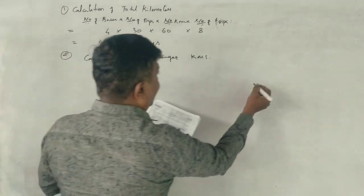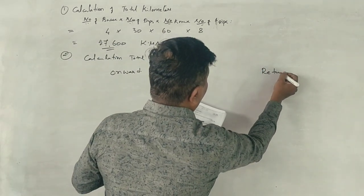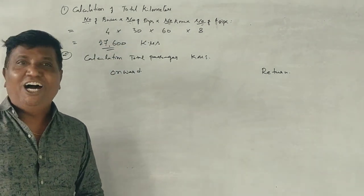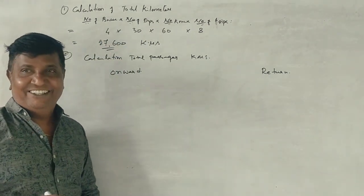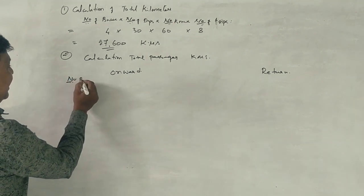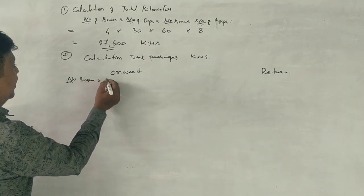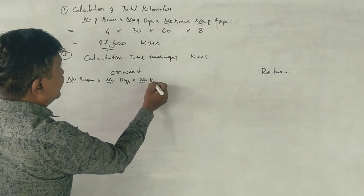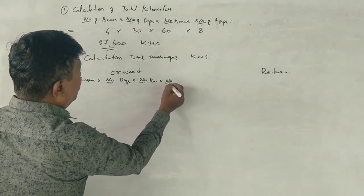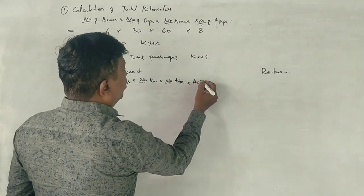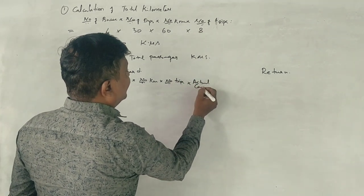Onward and return. Correct? Onward and return. Number of buses, number of days, number of kilometers, number of trips, into actual capacity, passenger actual passenger capacity.